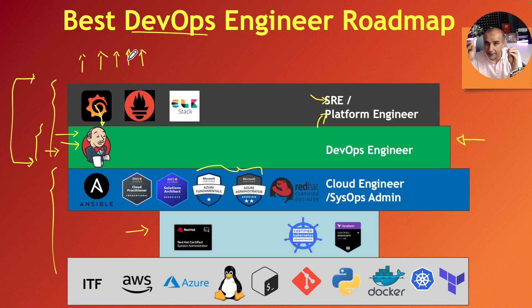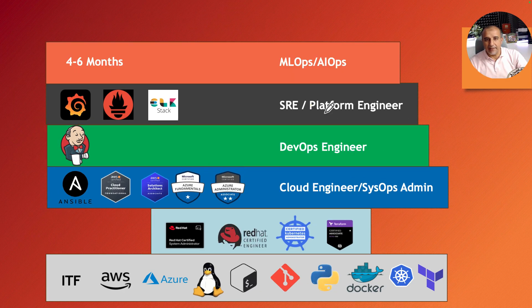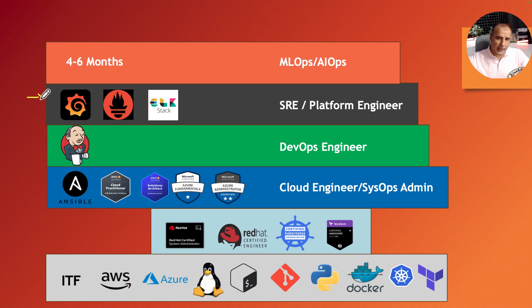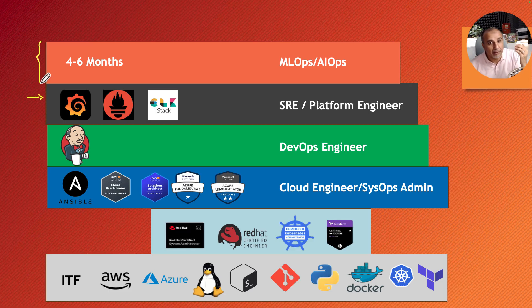I hope the cloud engineer and DevOps engineer roadmaps are now clear and how they relate to each other. If someone wants to go even further into MLOps and AIOps — beyond SRE and platform engineering, staying on the engineering side rather than architecture — that's a sweet spot AI likely won't impact for the next seven to ten years. The delta effort there is about two to three months, or up to six months depending on time and effort invested.